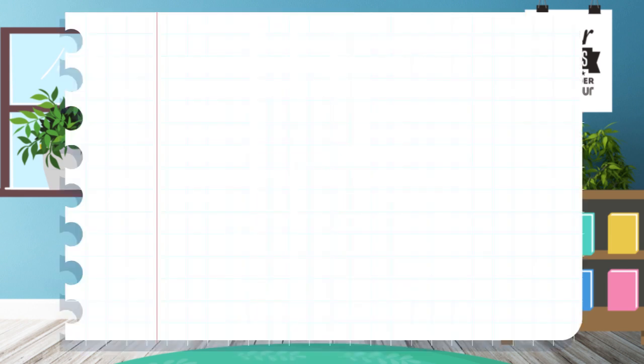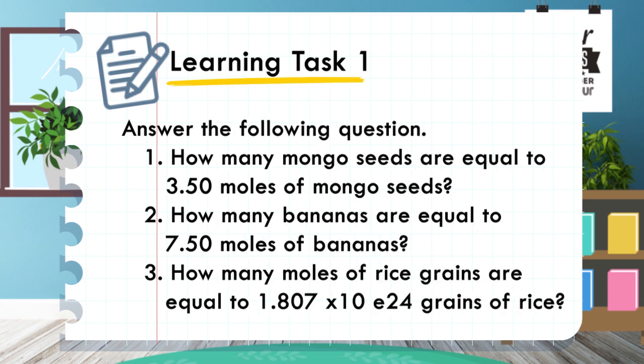Now it's your turn. Here's your learning task number 1. Answer the following questions. Number 1: how many mongo seeds are equal to 3.50 moles of mongo seeds? Number 2: how many bananas are equal to 7.50 moles of bananas? Number 3: how many moles of rice grains are equal to 1.807 times 10 to the 24th power grains of rice?